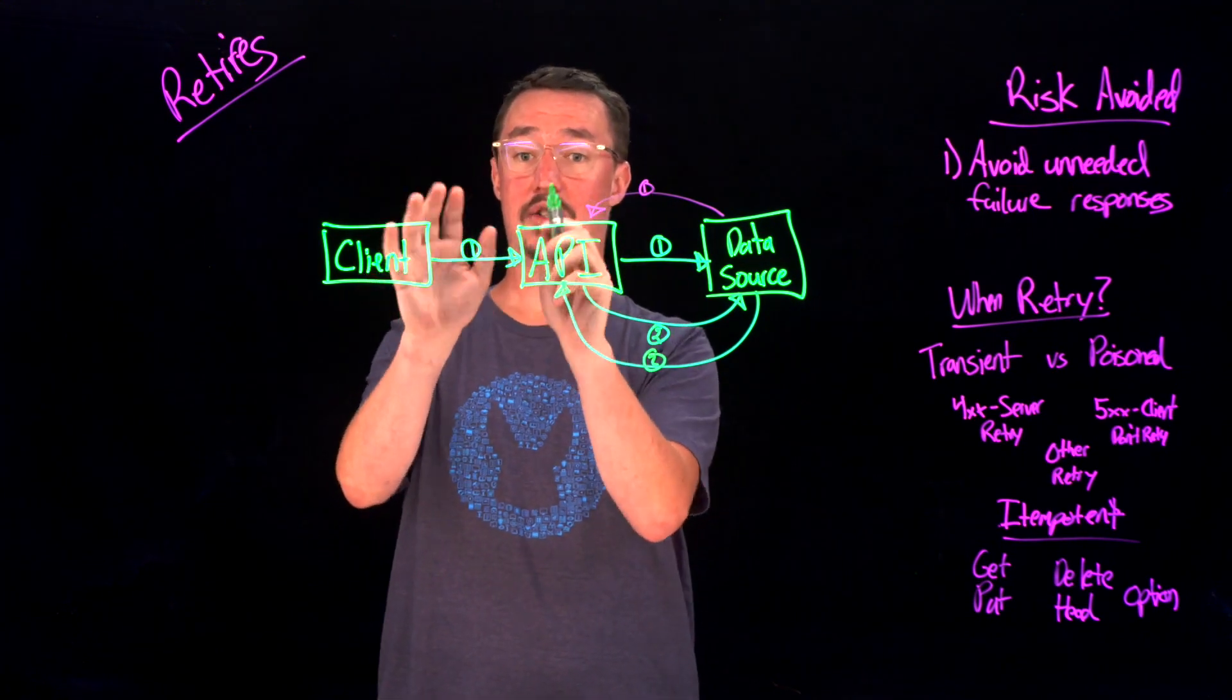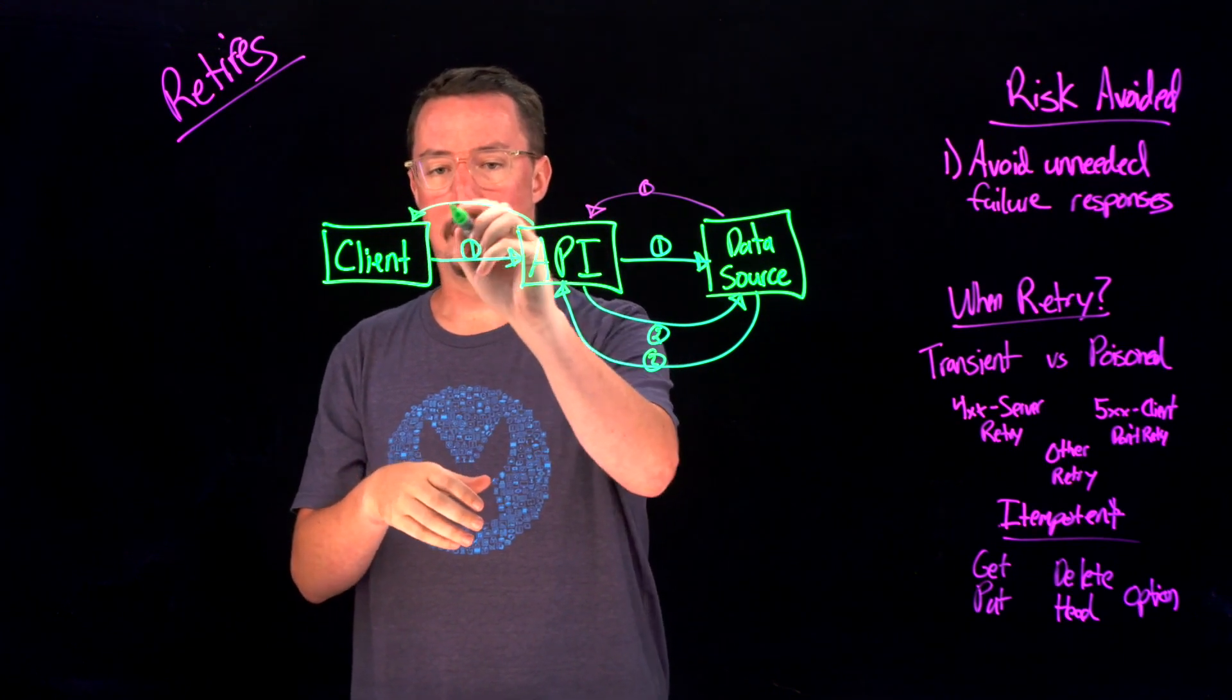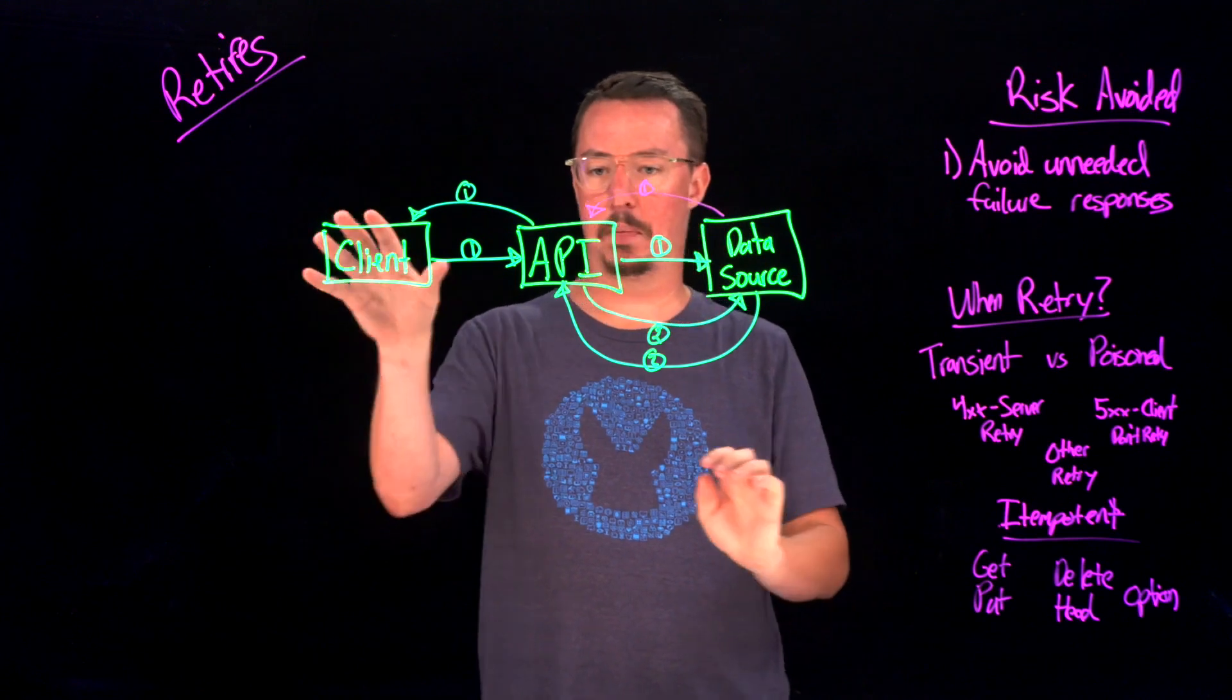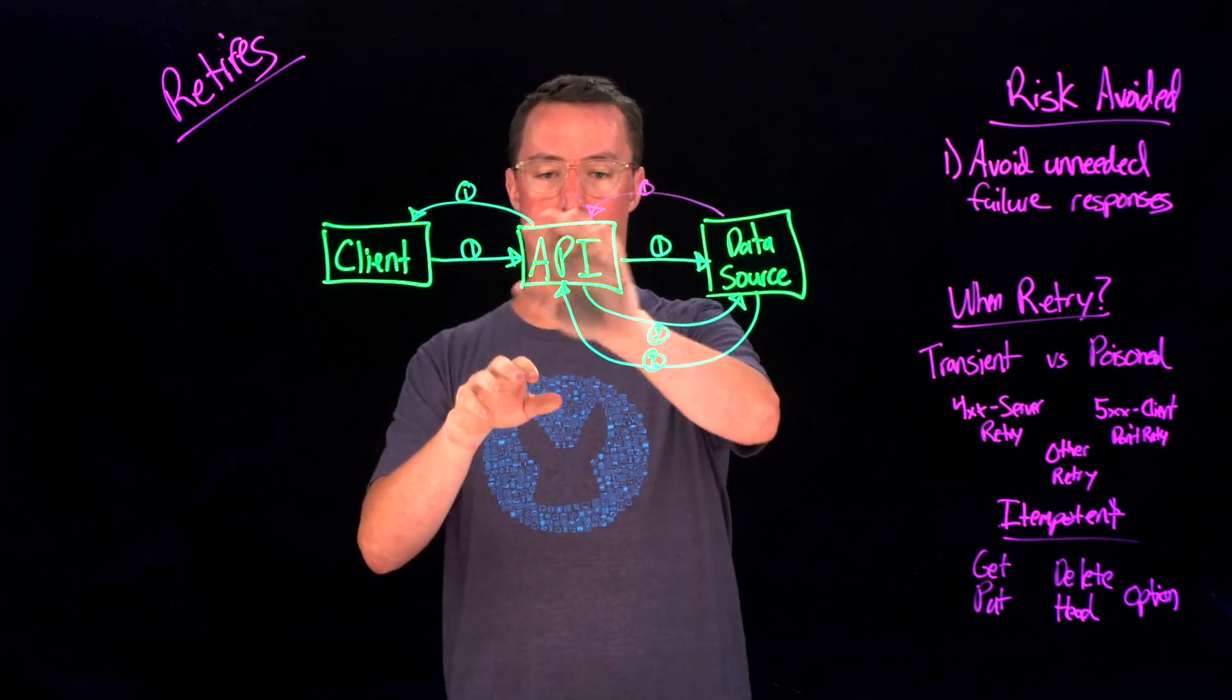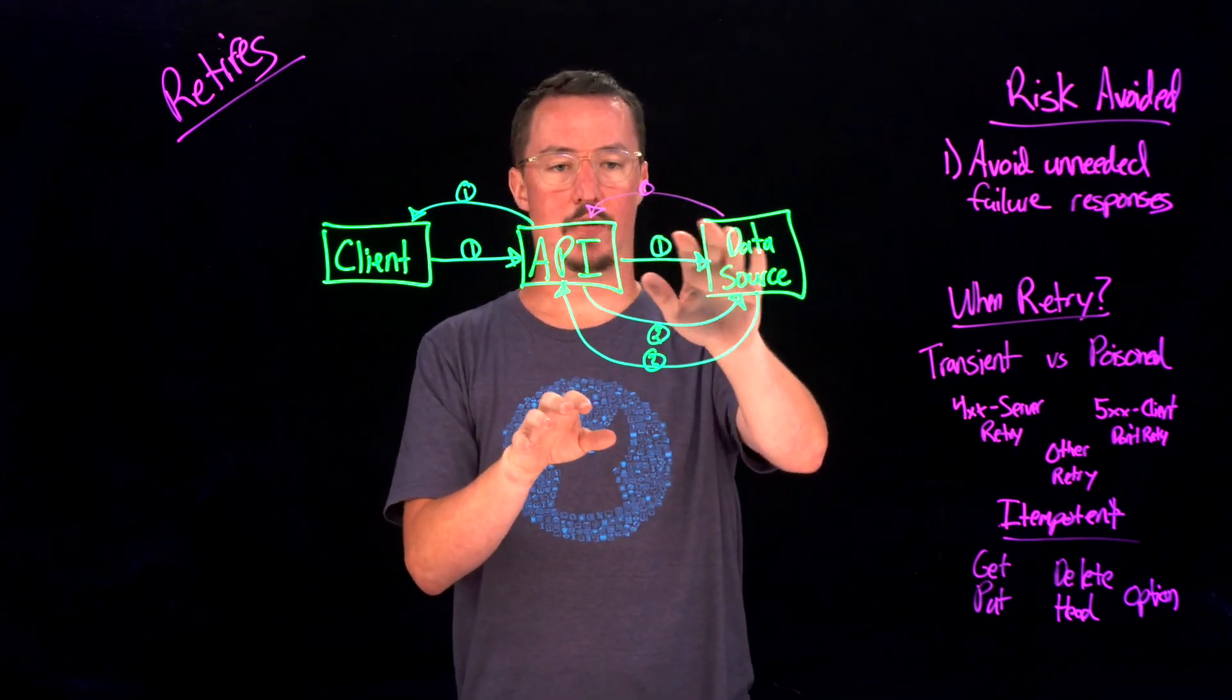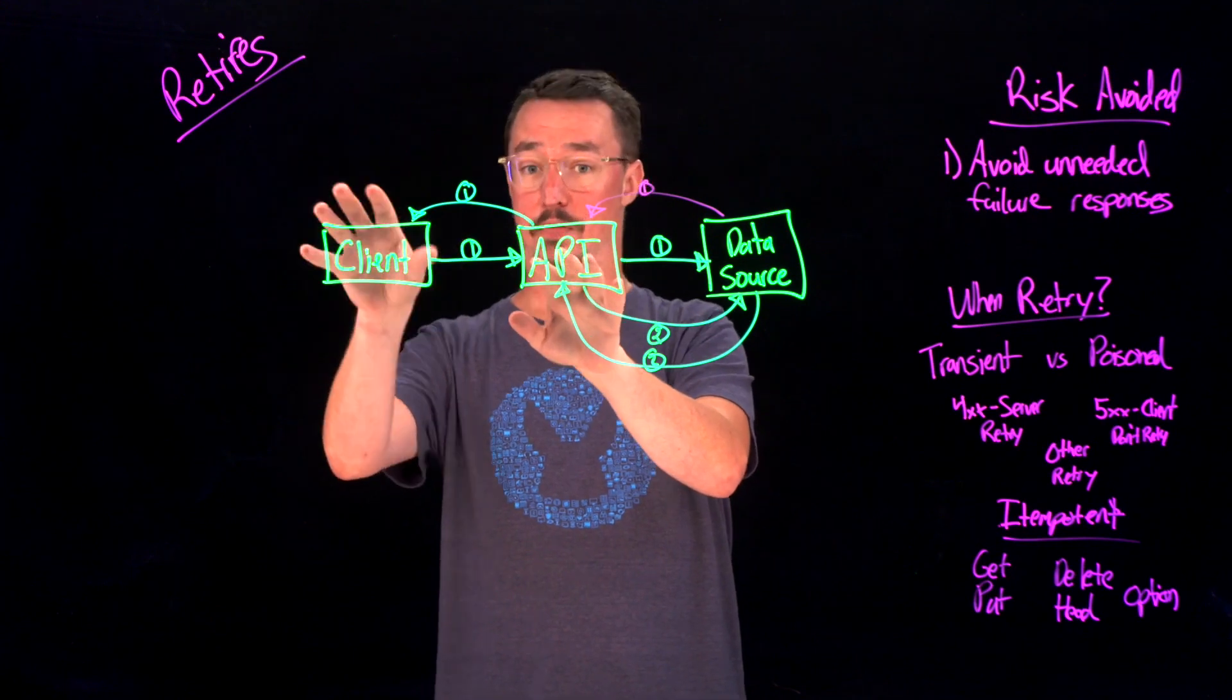Now to the client, it just looks like I made one call and I'm just going to get my data back just the first time I called it. So that's the beauty of this pattern is you can go through and have the logic in your API that just because it receives a failure response back doesn't necessarily mean it needs to respond back to the client with a failure message.